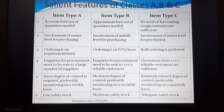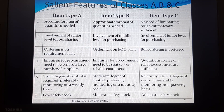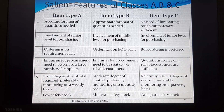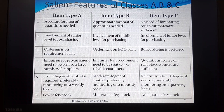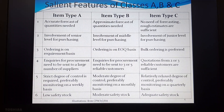For Class B items, only an approximate forecast is needed, compared to the accurate forecast required for Class A. Involvement of a middle level purchasing committee is acceptable. Ordering is done on an EOQ basis. Procurement enquiries are sent to about three to five reliable suppliers. The degree of control is on a monthly basis — a moderate degree of control is sufficient.